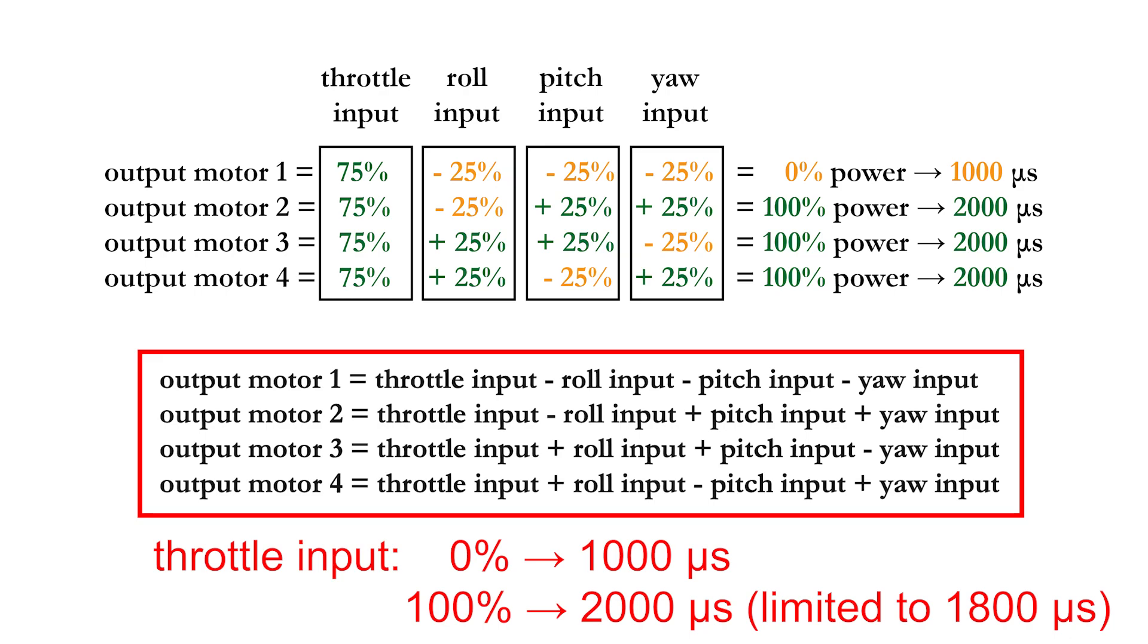You can write this example in a more general way by using equations in which the output of each motor is a linear combination of the throttle, roll, pitch, and yaw inputs. The only thing that changes in each equation are the plus and the minus signs. Now the throttle input ranges from 0 to 80% and the transformation to microseconds is very easy.